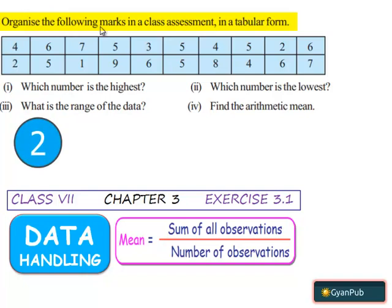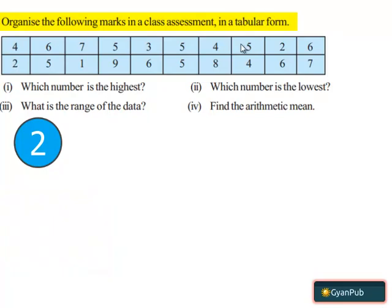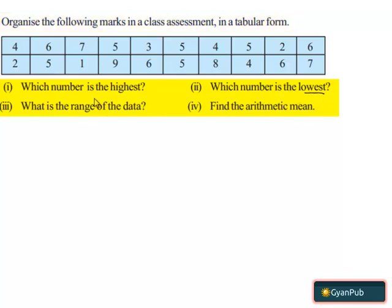Question number 2 is to organize the following marks in a class assessment in a tabular form. Here the tabular form is given. The first part asks which number is the highest. The second part asks which number is the lowest. The third part asks what is the range of the data. And the fourth part asks to find the arithmetic mean.